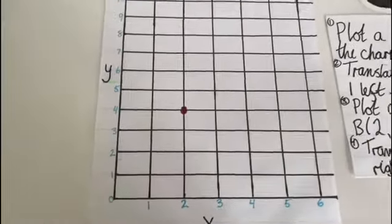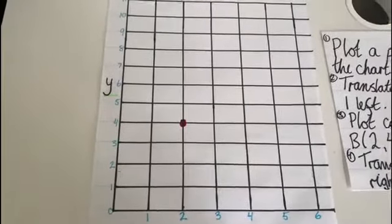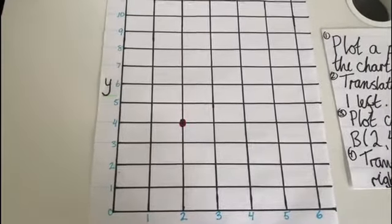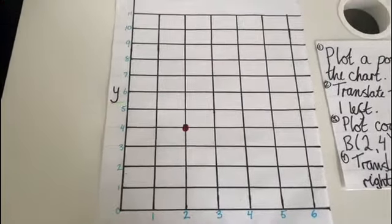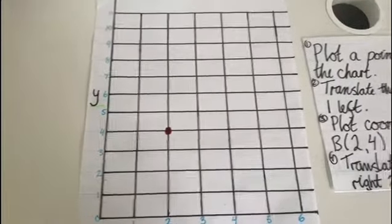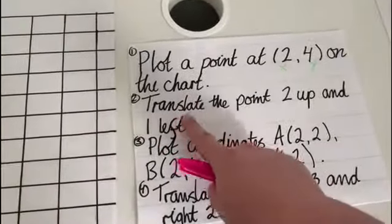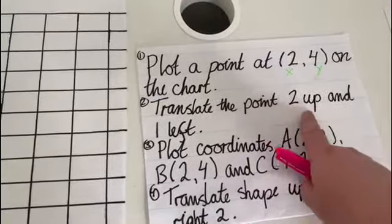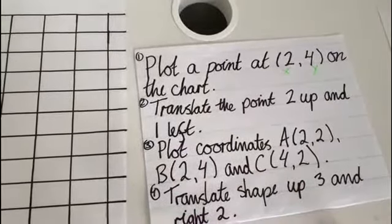The next step will be to translate the point. A translation means I'm just moving that point to a different location on the same graph. So today I'm going to translate the point up 2 and 1 to the left.